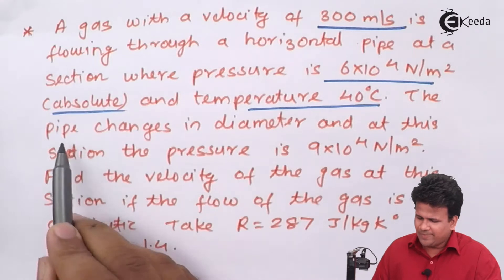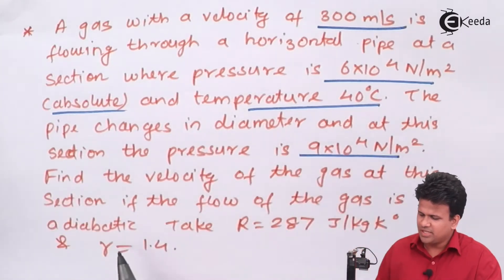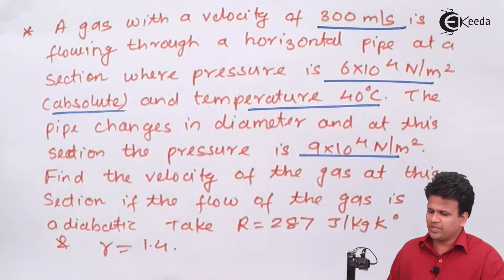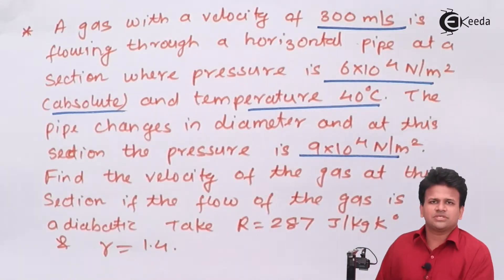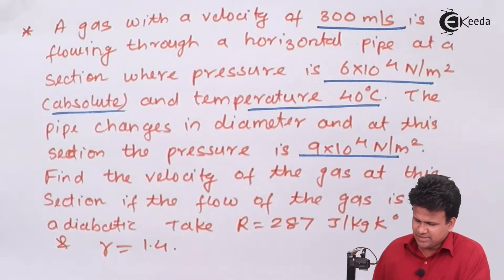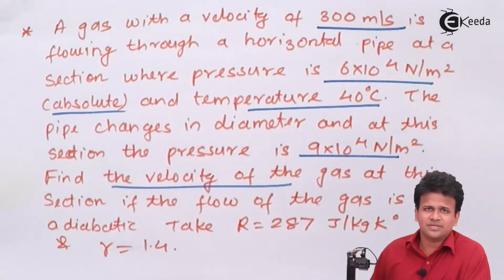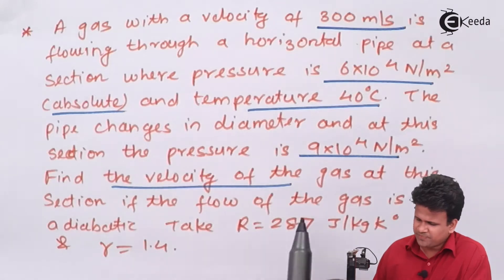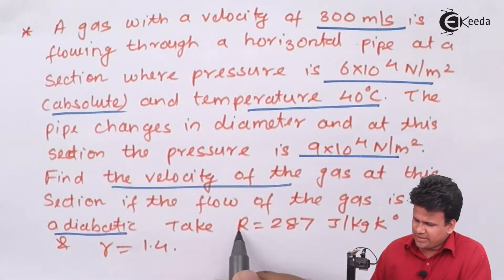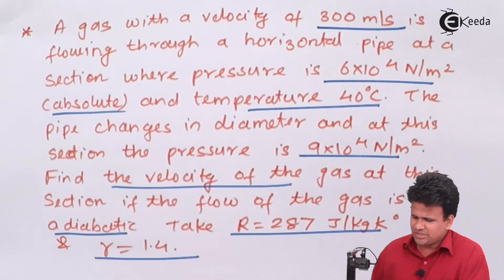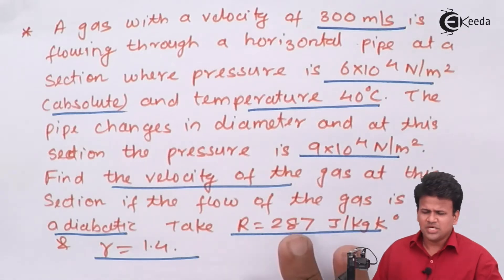The pipe changes its diameter, and at this section the pressure is 9 × 10⁴. Due to the change in diameter, the pressure has increased. We have to find the velocity of the gas at the next section if the flow is taken as adiabatic, and the universal gas constant R and gamma equals 1.4 are both given.